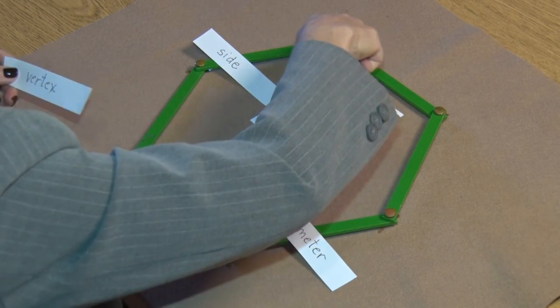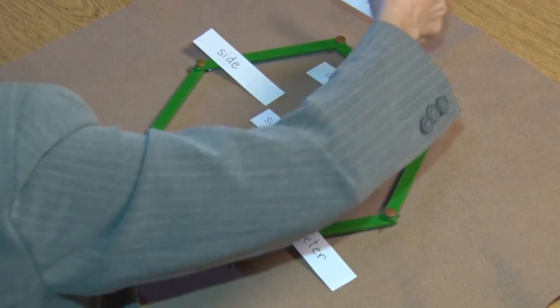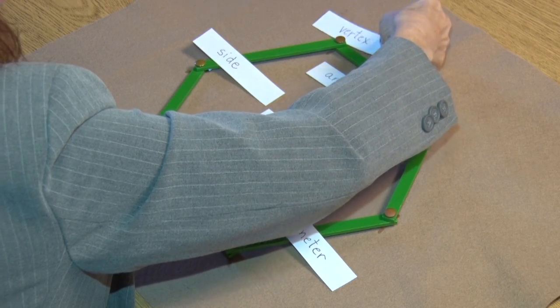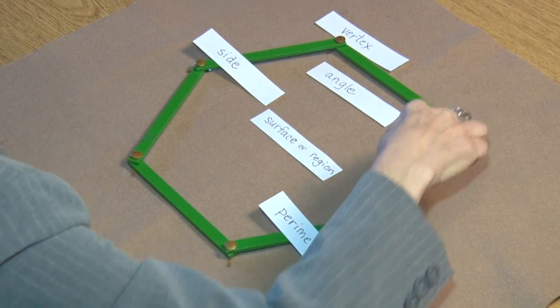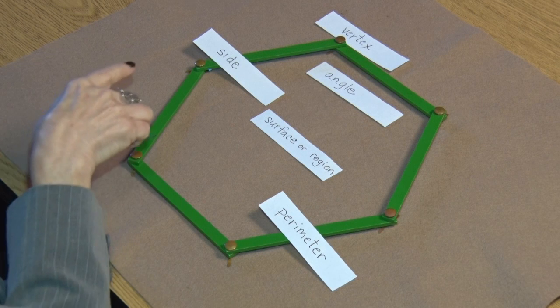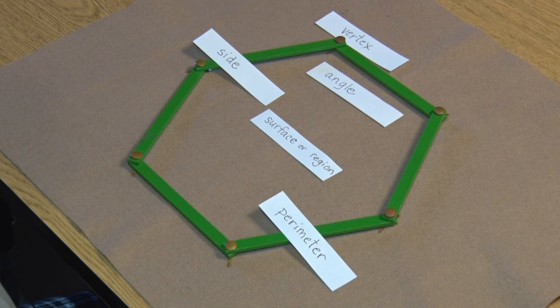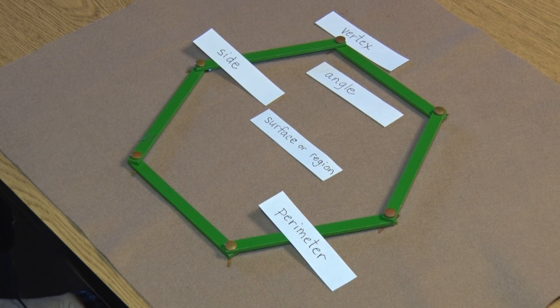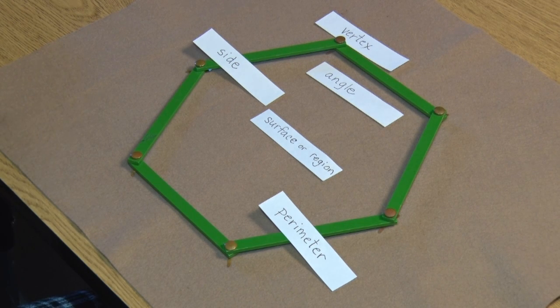At the point where two sides meet, there's a vertex. And this regular polygon has the same number of vertices as it has sides and angles. So a regular hexagon has six vertices. One of them is called a vertex.